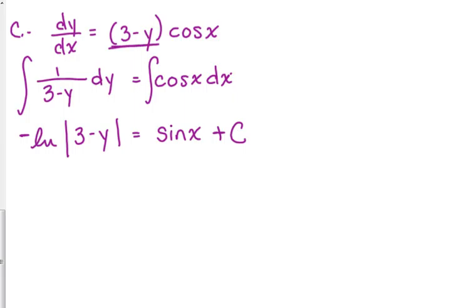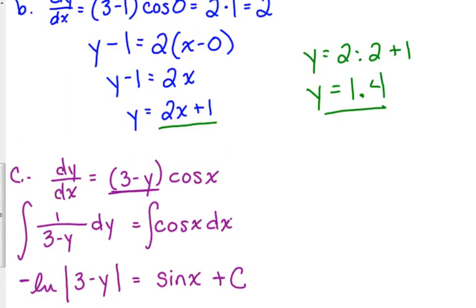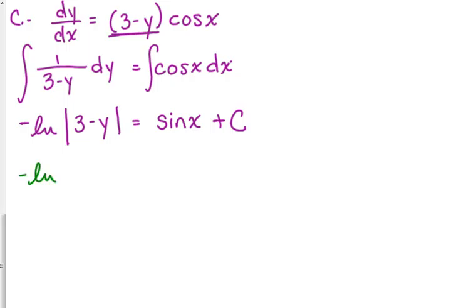It says one point for the constant integration. So, I don't know if they're meaning if you just stick plus C on the end, because the next point says uses the initial condition. Uses the initial condition. What was the initial condition? Zero, one, right? So, let's plug that in. One is y. Zero is x. So, that's the negative natural log of 2. Well, we don't need the absolute value bars anymore, because 2 is positive. The sine of 0 is 0. So, that means C is the negative natural log of 2.